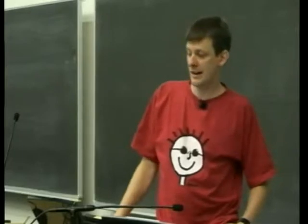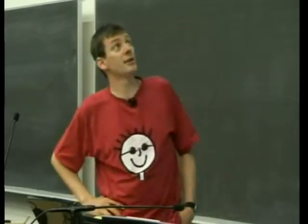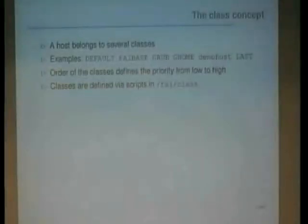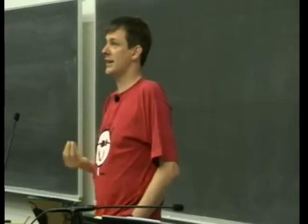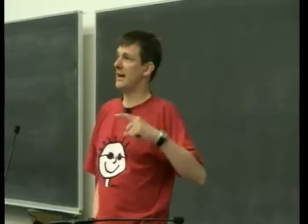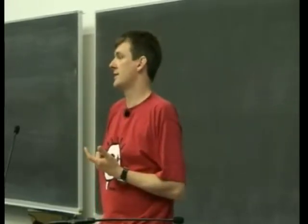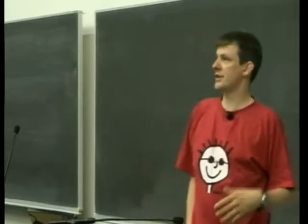Something about the class system: a host belongs to several classes, and the list of classes is an ordered list with priority. 'Default' has the lowest priority; classes are mostly written in uppercase except for the hostname. In this example the hostname 'demohost' has nearly the highest priority, and a class 'last' is defined for special things. It's very easy to define classes — there's a directory called 'phi_class' and any script or executable in that directory whose output is written to standard out is automatically defined as a class.